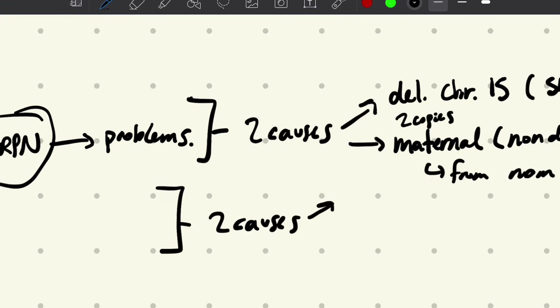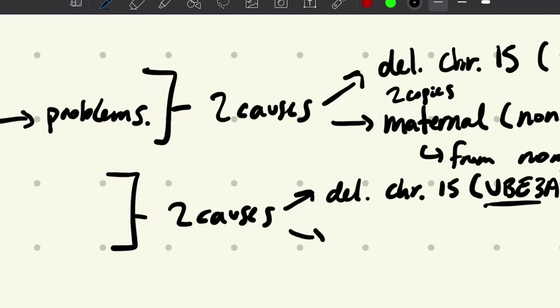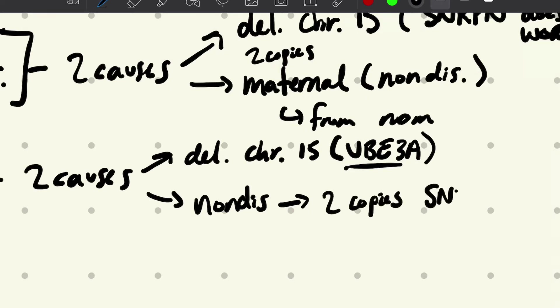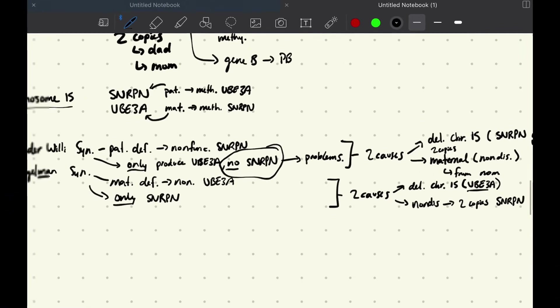For Angelman syndrome, it's either going to be a deletion on chromosome 15 in your UBE3A gene, which results in a defective UBE3A protein, or you're going to have non-disjunction — that's going to lead to no copies of your maternal UBE3A and lead to only copies from your paternal, so you're only going to have two copies of your SNRPN protein.